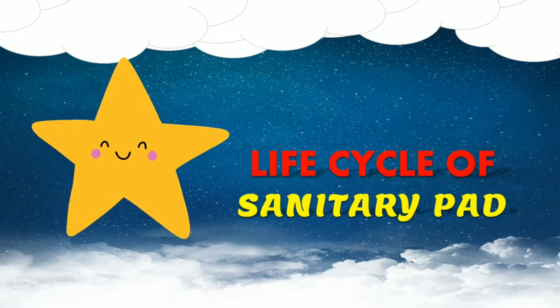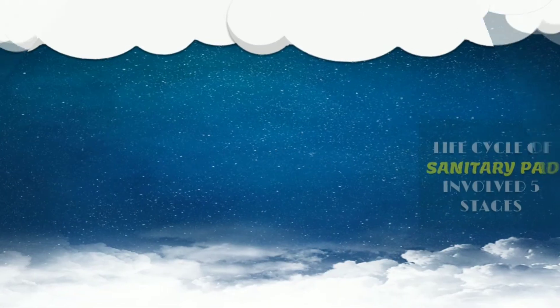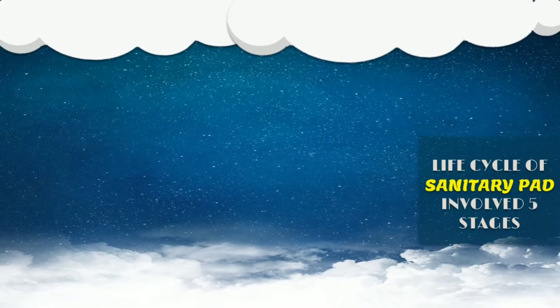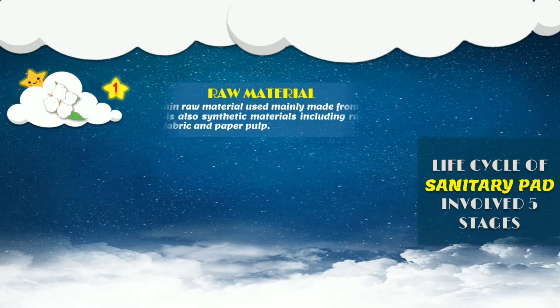Now let's move to the second part, which is on the life cycle of sanitary pad. There are five stages for the life cycle of sanitary pad. As for the first stage, it is on raw material. The main raw material used in making sanitary pad is mainly cotton. There are also synthetic materials including rayon, non-woven fabric, and paper pulp.